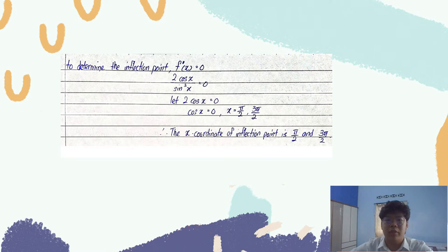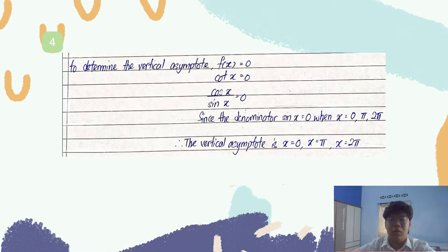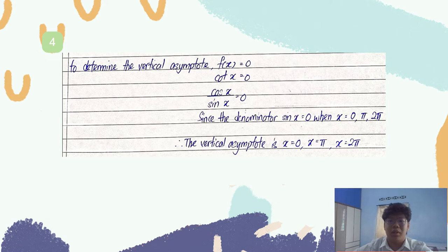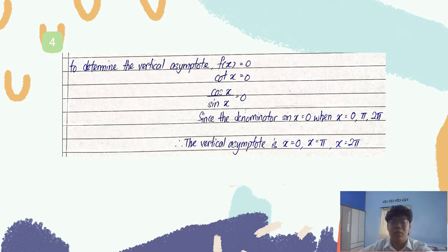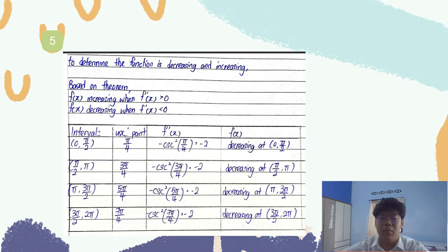So the inflection points of the function are at π/2 and 3π/2. To determine the vertical asymptotes, we set the denominator sin x equal to 0, which gives x equals 0, π, and 2π. So the vertical asymptotes of the function are x equals 0, x equals π, and x equals 2π.